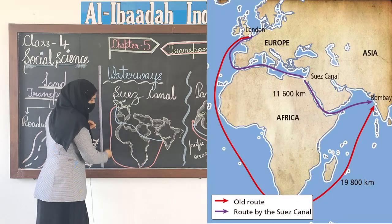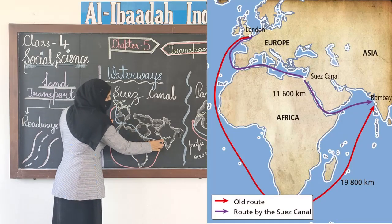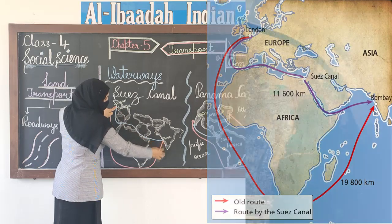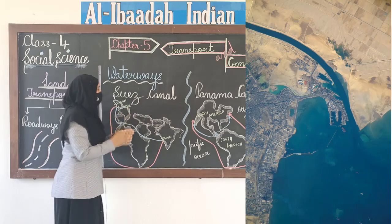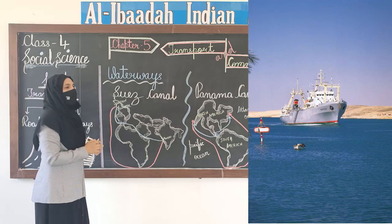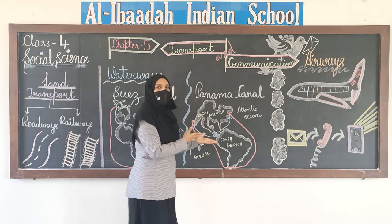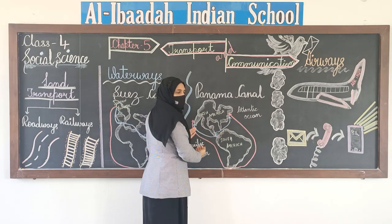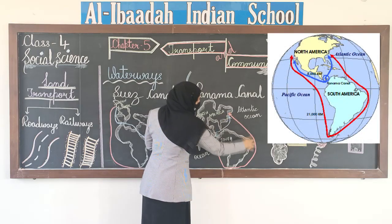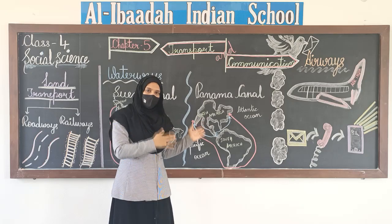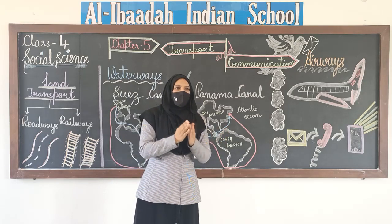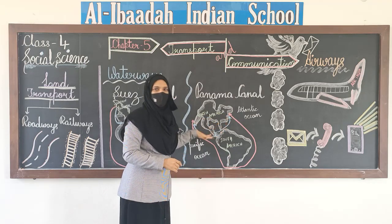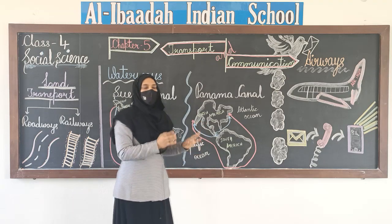Before the Suez Canal, from Mumbai to London they had to take a long route around Africa. A shortcut canal was made, making the journey shorter. It's called the Suez Canal and was made in 1869. Then the Panama Canal was also made to create a shortcut between the Atlantic Ocean and Pacific Ocean. Before that, ships had to travel all the way around. Traveling by waterways still takes months, but these canals made it much better.